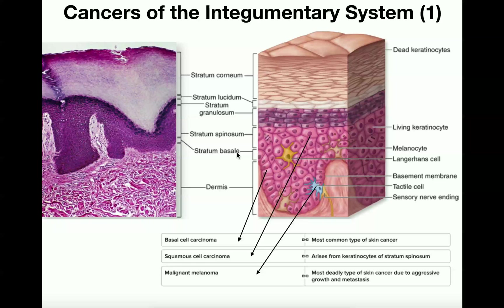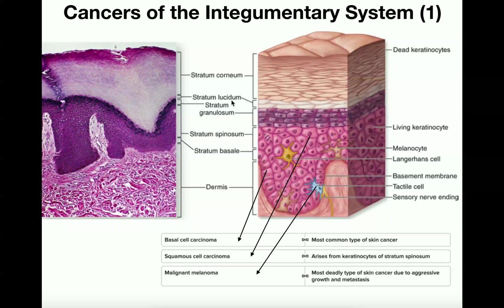Logically speaking, the two layers that should have the most cancers associated with them would be the stratum basale and the stratum spinosum, because cells of these layers — particularly the stratum basale — still have their mitotic activity. As you go more superficially, cells lose their mitotic activity, and in the corneum and lucidum layers they don't even have a nucleus to divide. So theoretically, the spinosum and basal layers carry the greatest cancer risk, and that's exactly what we see.